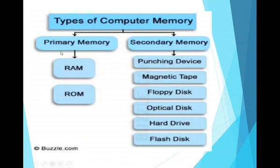Primary Memory is the main memory of the computer which can be directly accessed by the CPU. Primary Memory is of two types: RAM and ROM.